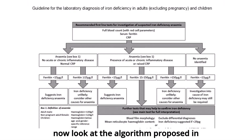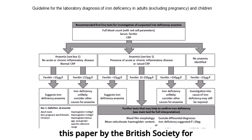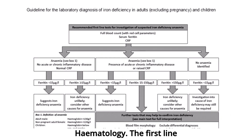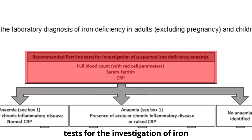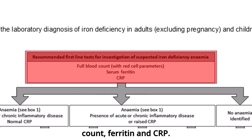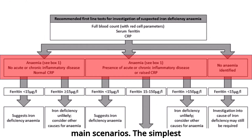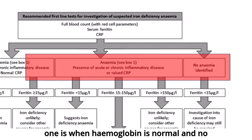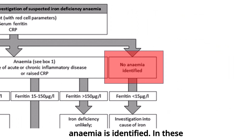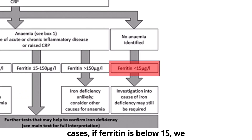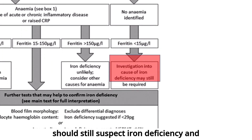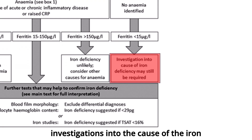Let's now look at the algorithm proposed by the British Society for Haematology. The first line tests for the investigation of iron deficiency anaemia are a full blood count, ferritin and CRP. The simplest scenario is when haemoglobin is normal and no anaemia is identified. In these cases, if ferritin is below 15, we should still suspect iron deficiency and investigations into the cause may still be required.